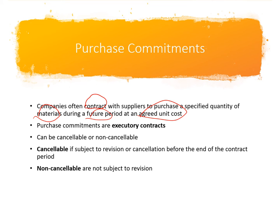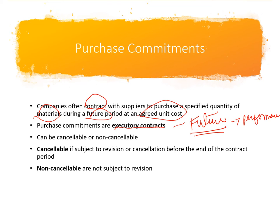For example, if I'm a manufacturing company and I want to secure a supply of my raw materials, I'm going to enter into what we call executory contracts. This means the performance will happen in the future. I need raw materials, so I find a supplier willing to sell a specified amount of materials at an agreed unit cost. Purchase commitments are very useful if the price of raw materials fluctuates too much.